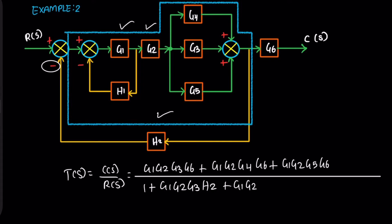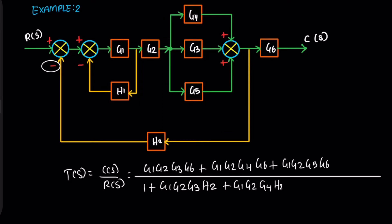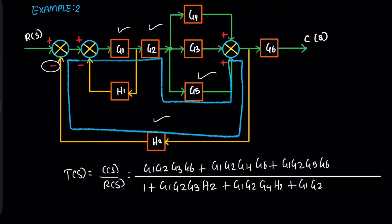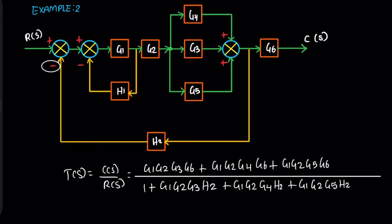Additional paths include G1, G2, G4, and H2; G1, G2, G5, and H2. This one is fully completed.